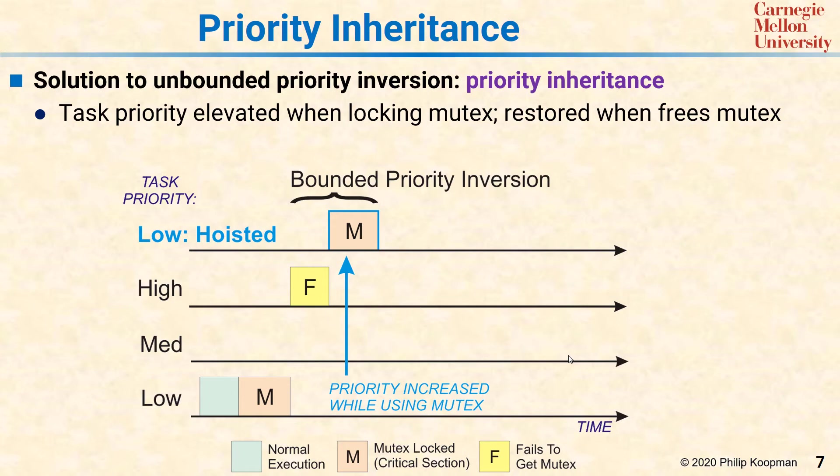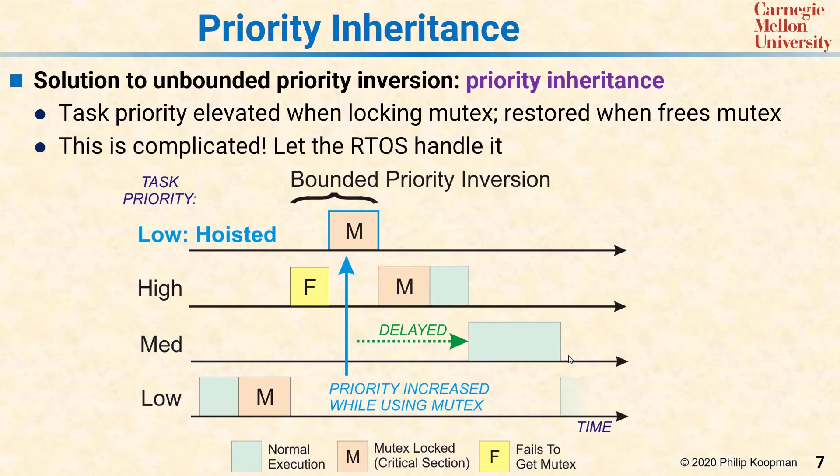The medium priority task wants to run as before, but it's delayed because the low priority task is running the entire time until it releases the mutex. Eventually, the low priority task is done with the mutex and immediately stops running.